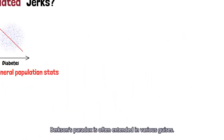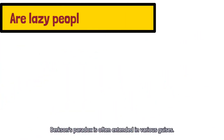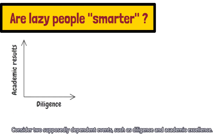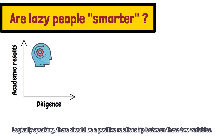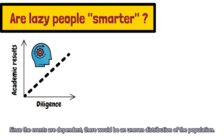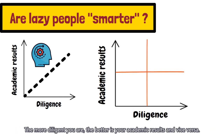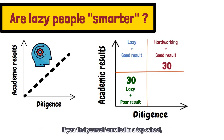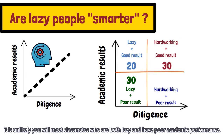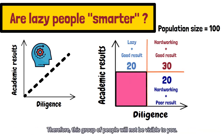Berkson's paradox is often extended in various guises. Consider two supposedly dependent events, such as diligence and academic excellence. Logically speaking, there should be a positive relationship between these two variables. Since the events are dependent, there would be an uneven distribution of the population. The more diligent you are, the better your academic results, and vice versa. If you find yourself enrolled in a top school, it is unlikely you will meet classmates who are both lazy and have poor academic performance. Therefore, this group of people will not be visible to you.